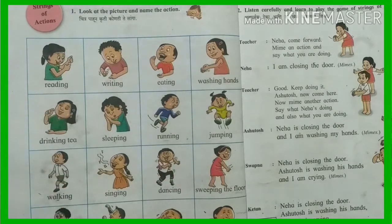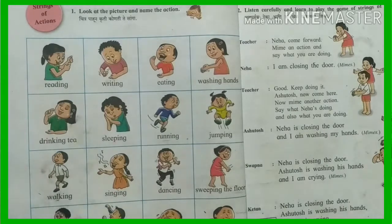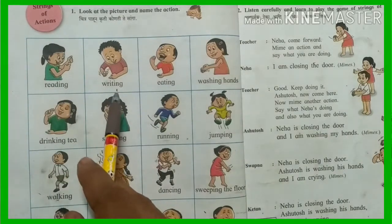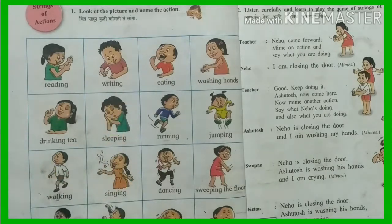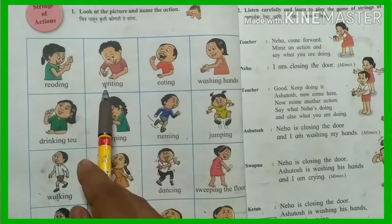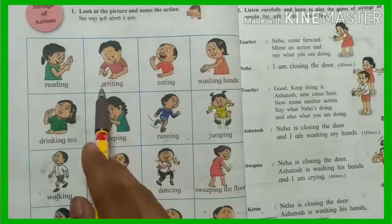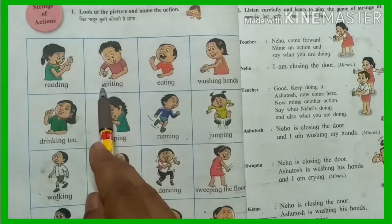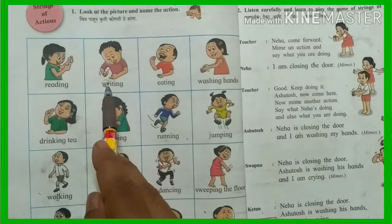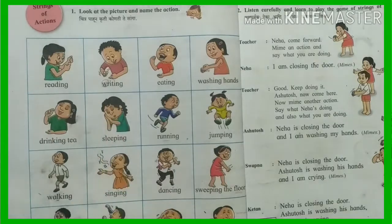Look at the first picture of a girl who is reading. R-E-A-D-I-N-G. Reading means Vachne. Next picture: Writing. W-R-I-T-I-N-G. Writing. This is an action.